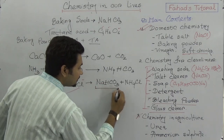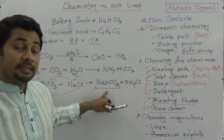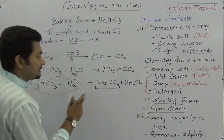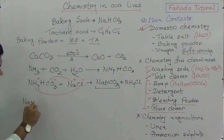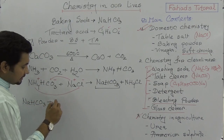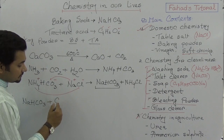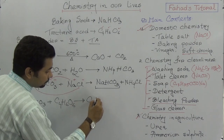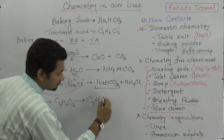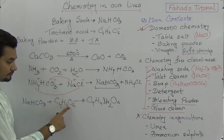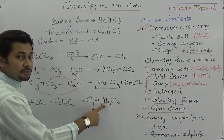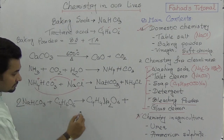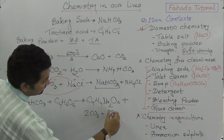Then this baking soda is mixed with tartaric acid (C₄H₆O₆) to produce baking powder. When sodium bicarbonate is mixed with tartaric acid, it will produce sodium tartrate (C₄H₄Na₂O₆) plus 2CO₂ plus 2H₂O.